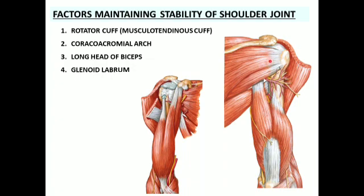These rotator cuff muscles support the shoulder joint from the anterior aspect, from above, and from the posterior aspect. This means that from below, there are not many structural factors to support the shoulder joint. That is why inferior dislocation of the shoulder joint is quite common. Another stabilizing factor is the coracoacromial arch, formed by the acromion process posteriorly and the coracoid process anteriorly, bridged by the coracoacromial ligament — forming an arch that supports the shoulder joint from above.